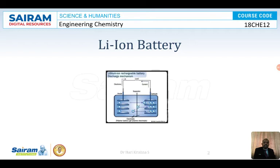The lithium-ion battery consists of an anode, a cathode, an electrolyte, and a separator. The anode is made up of lithium cobalt oxide. The cathode is the inert metal which contains graphite, and the two electrodes are separated by a separator.